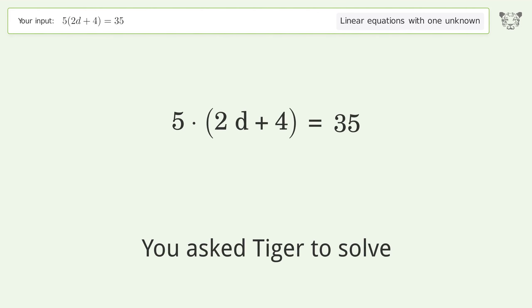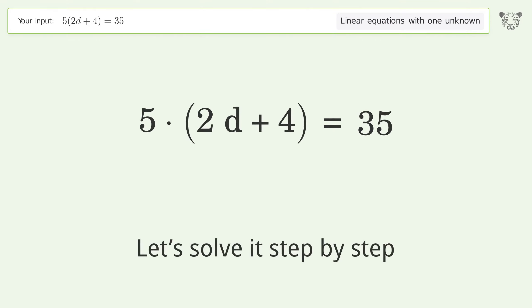You asked Tiger to solve this. This deals with linear equations with one unknown. The final result is d equals 3 over 2. Let's solve it step by step. Simplify the expression.